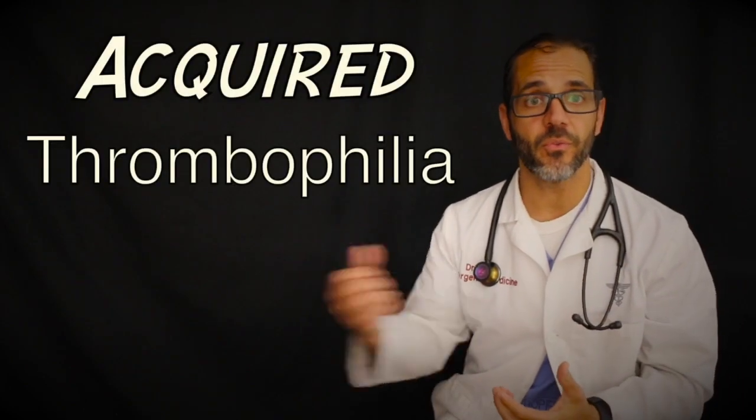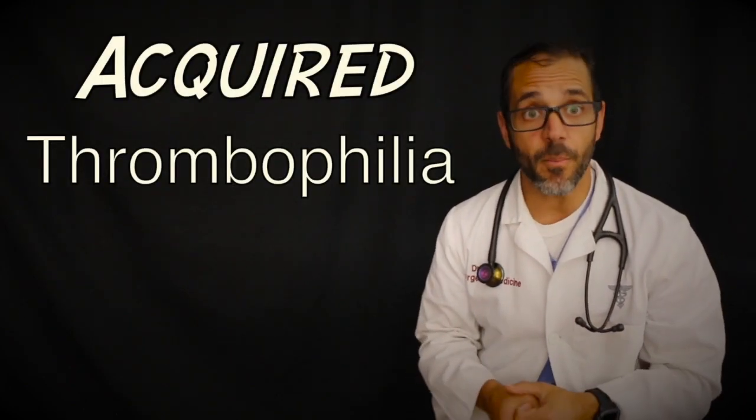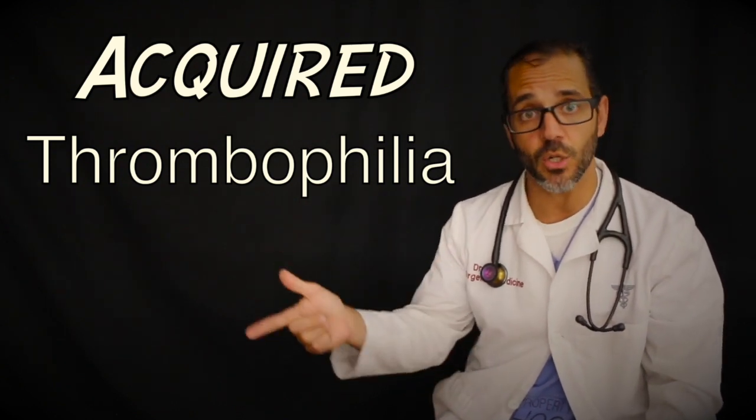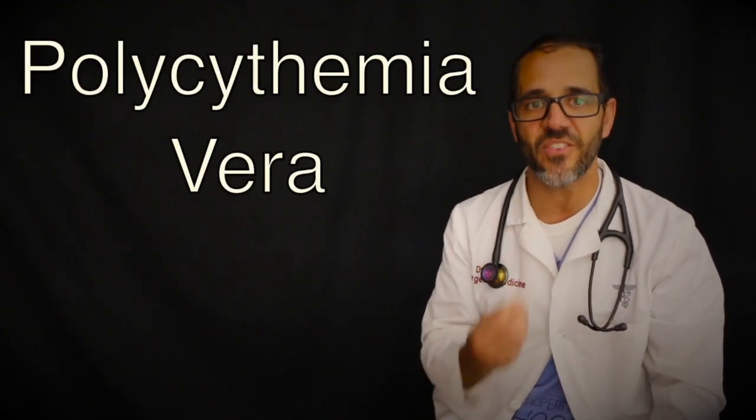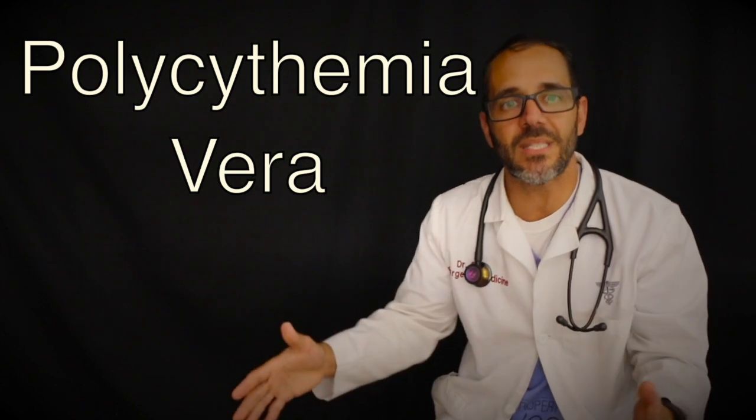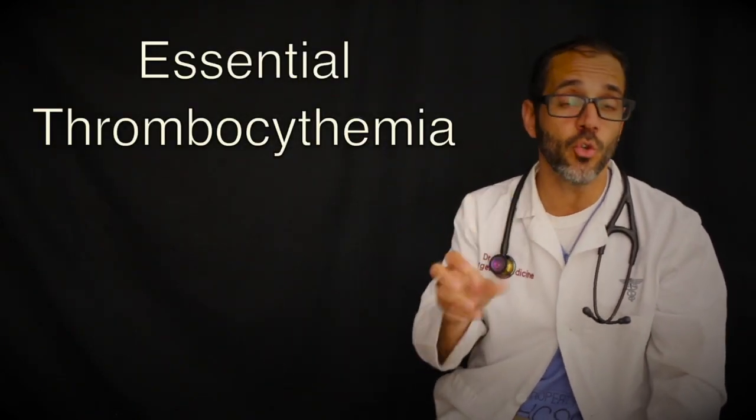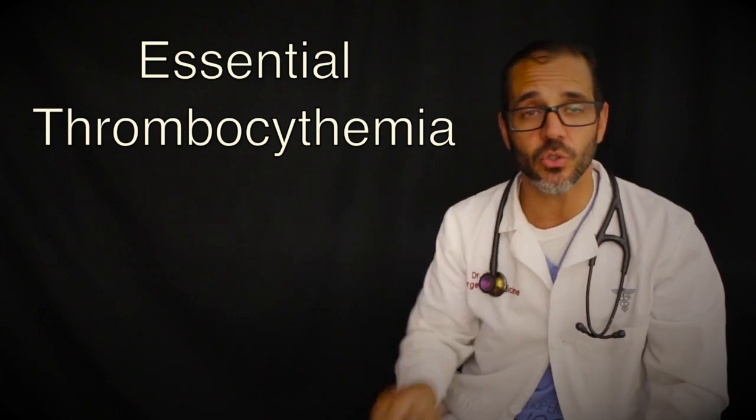Acquired thrombophilia. Some types of thrombophilia are not inherited but can still increase a person's risk of developing a blood clot. Examples of this include certain disorders of the blood such as polycythemia vera, that's when you make too many red cells, or essential thrombocythemia in which you make too many platelets, those tiny little sticky cells.